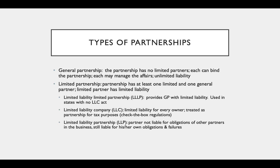There are other creatures of law that allow further limitations of liability. The first is the limited liability limited partnership, the LLLP, which provides the general partner with limited liability. This is used in states that don't have a limited liability company act. The LLC, limited liability company, has limited liability for every owner and is treated as a partnership for tax purposes under the check-the-box regulations, so it can elect to be taxed as a partnership or a corporation.